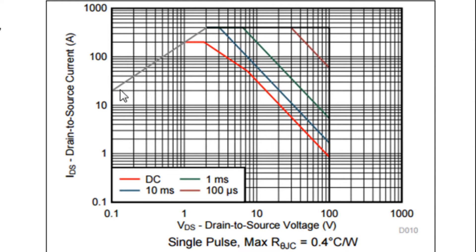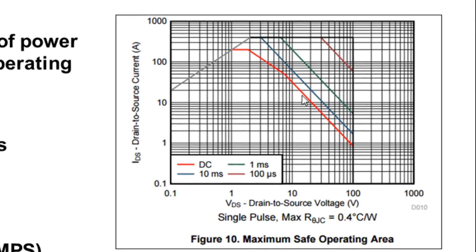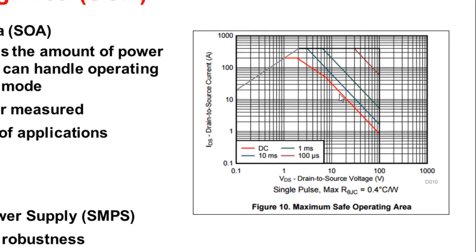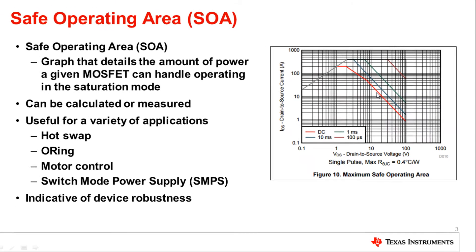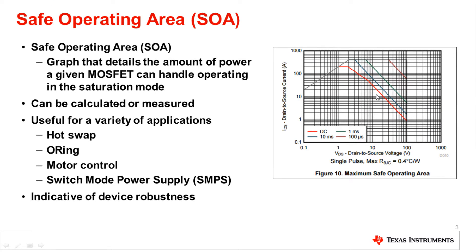You've got all these limitations and boundaries, and then inside you've got more limitations for each individual pulse duration. These lines on the inside can either be calculated or measured, and it's generally preferred that they're measured. When you calculate them, you can come up with theoretical values that are actually far greater than the FET can handle in real life in application.